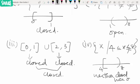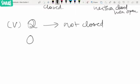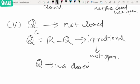It is R\Q, which is the irrational numbers. But irrational numbers are not open, which implies Q is not closed. Thank you guys, see you in the next video.